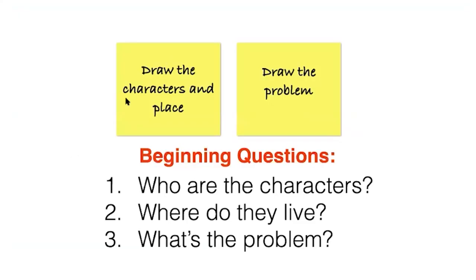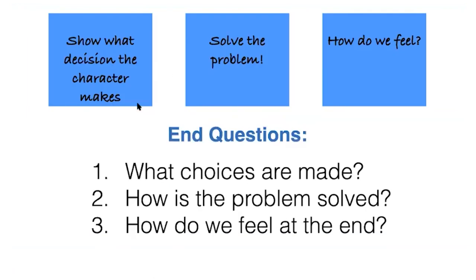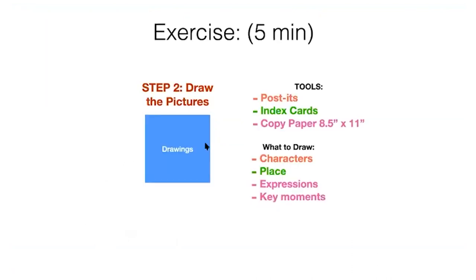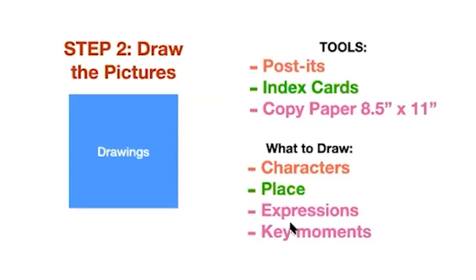In the beginning, draw your characters and place, and draw the problem. Beginning questions: Who are the characters? Where do they live? What's the problem? In the middle, draw what happens next, how the problem gets worse, what changes happen, and what choices the characters make. At the end, show how the problem is solved, how the characters feel, and what decision affected the problem. Now spend the next five minutes drawing pictures — characters, places, expressions. Draw a bunch!